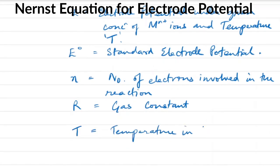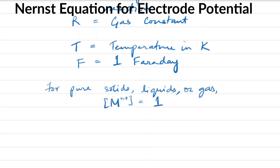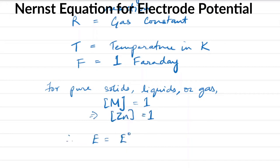N is the number of electrons involved in the electrode reaction. For pure solids, liquids, or gases at one atmospheric pressure, the molar concentration is taken as unity. Therefore the concentration of the metal is one, and the Nernst equation becomes: E = E° − (RT/nF) log(1/[M^(n+)]).